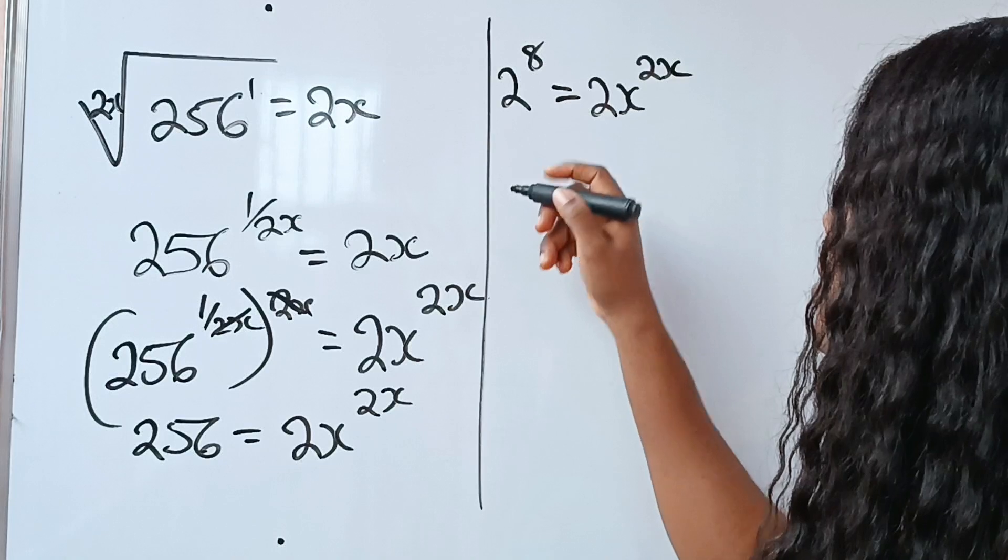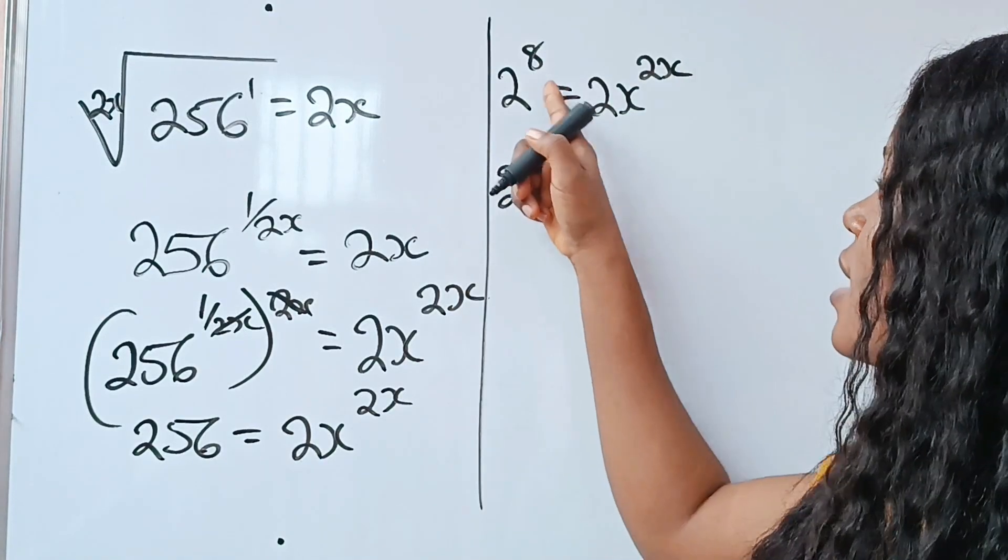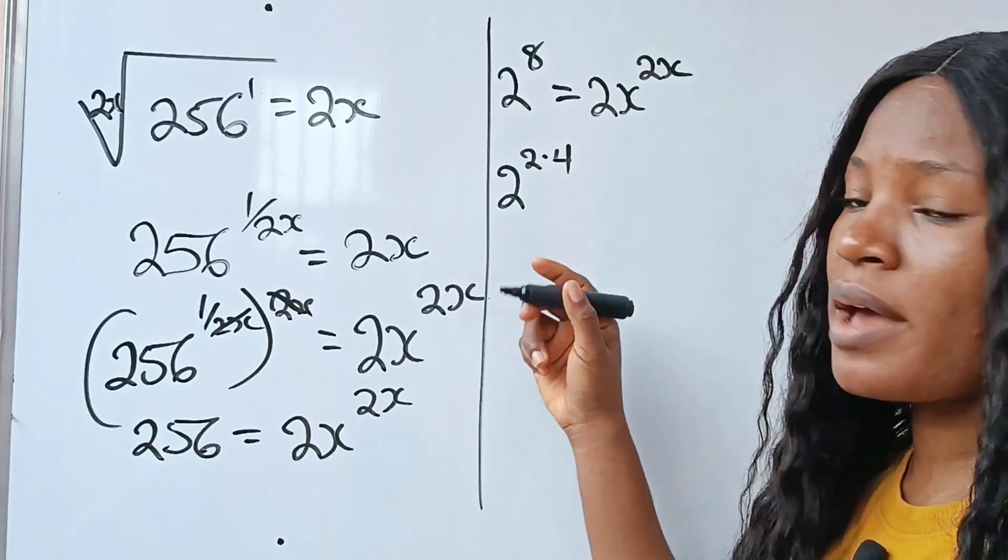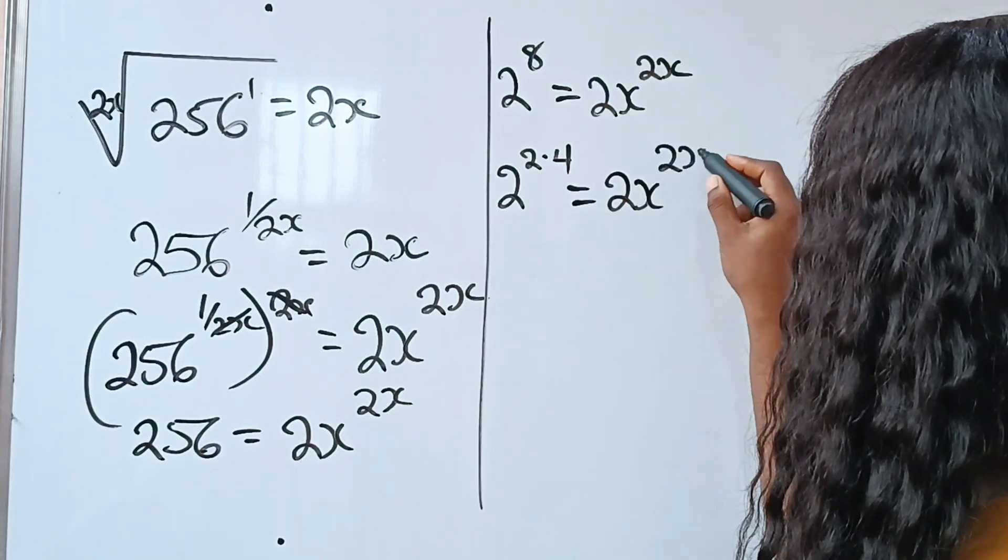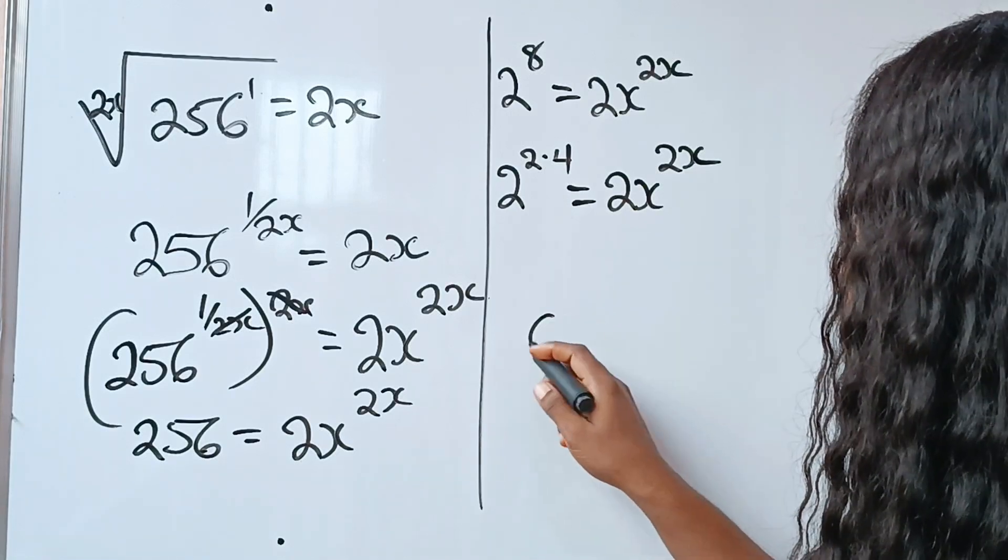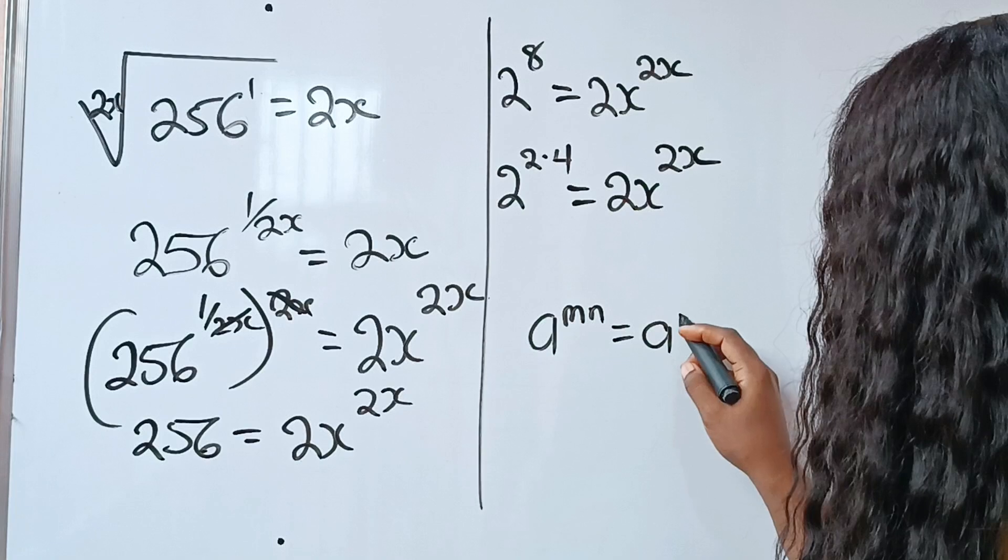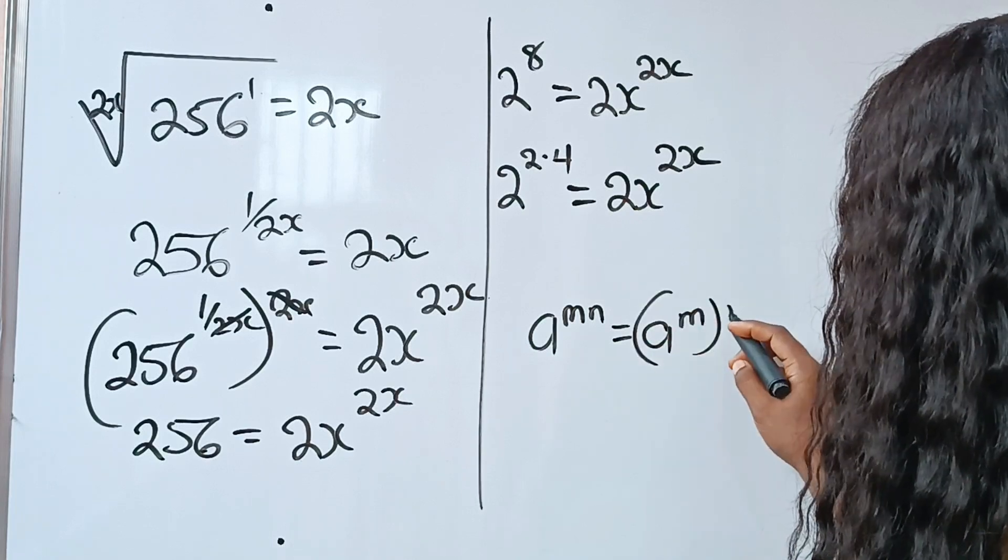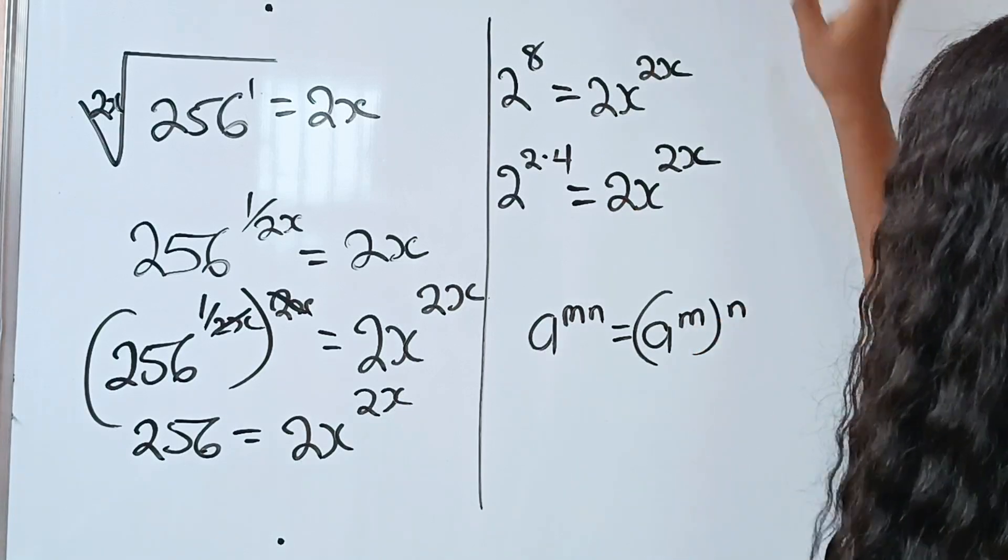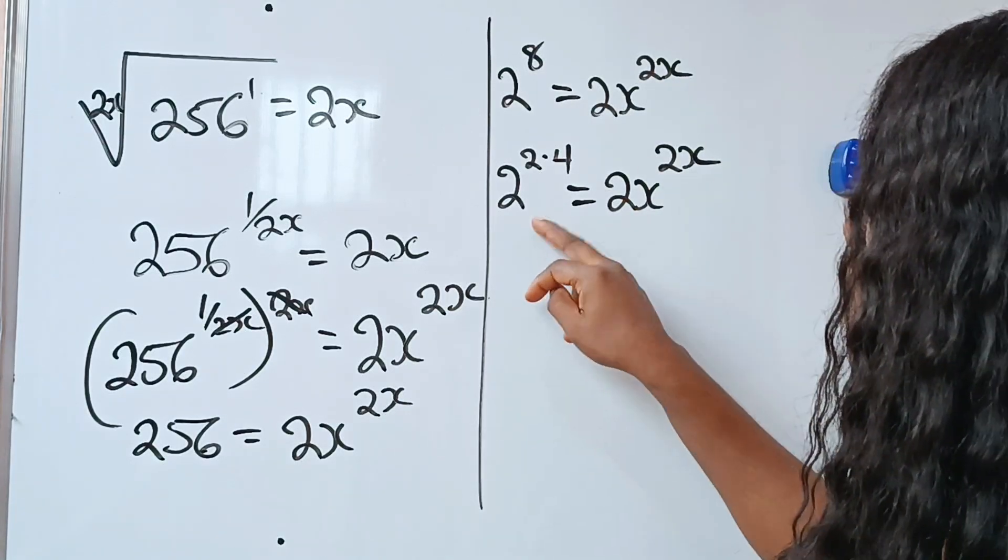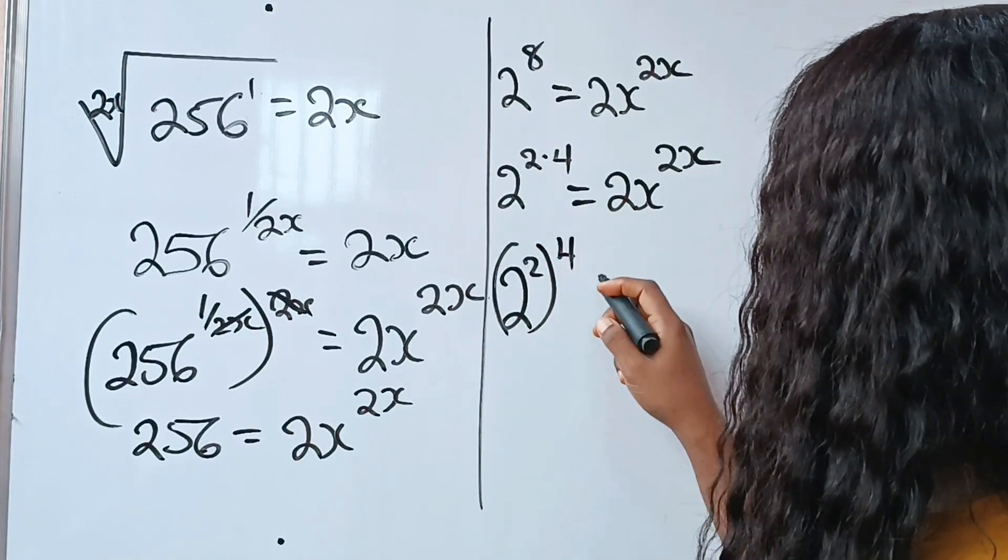Now, we can write this as 2 to the power of 2 multiplied by 4, because 8 is 2 multiplied by 4, which is equal to 2x to the power of 2x. Recall that a to the power of mn is the same thing as a to the power of m raised to the power of n. So that means we can write this as 2 to the power of 2 raised to the power of 4.